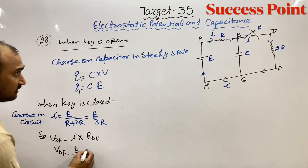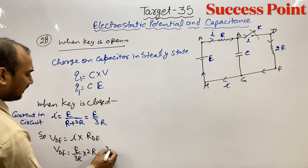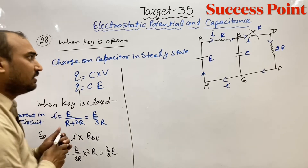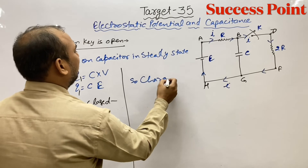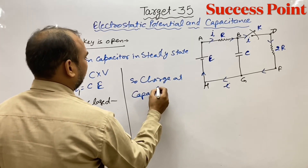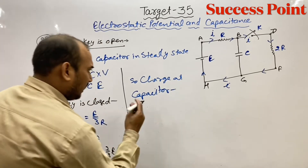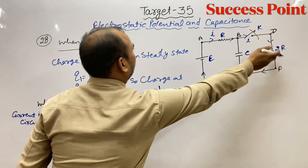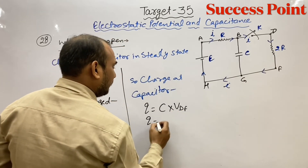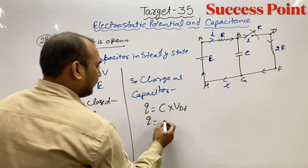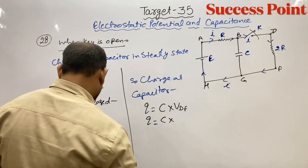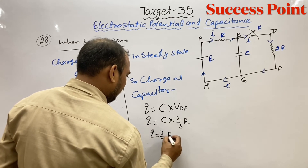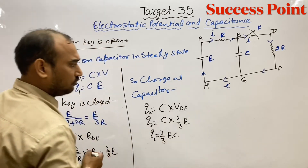VDF = i × resistance of DF = (E/3R) × 2R = 2E/3. So the potential difference across D and F is 2E/3. Therefore, charge stored on capacitor: q = C × V = C × VDF = C × (2E/3) = 2CE/3. This is q2.